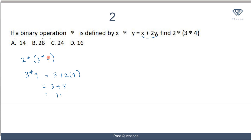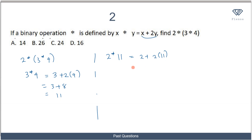So I replace 3★4 with 11. Now I'm left with 2★11. Using the same formula, my x value is 2 and my y value is 11, so x + 2y = 2 + 2(11) = 2 + 22 = 24.